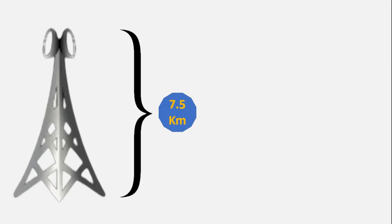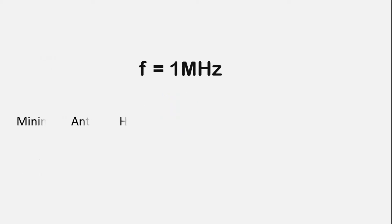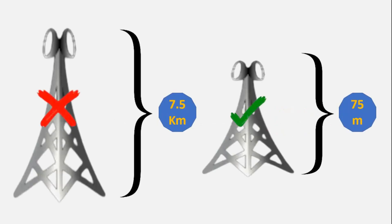Now let us consider a modulated signal where frequency is 1 megahertz. The minimum antenna height now will be 75 meters. This antenna can be easily installed practically. Thus, modulation reduces the height of the antenna.